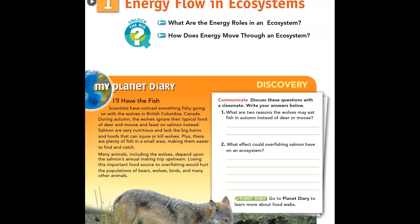Chapter 2, Ecosystems and Biomes. Through this chapter, we're going to be figuring out how does energy and matter move through ecosystems and where do living things even get their food? Lesson 1, Energy Flows in Ecosystems. After this lesson, we will be able to name and describe energy roles that organisms play in an ecosystem, as well as explain how energy moves through an ecosystem.